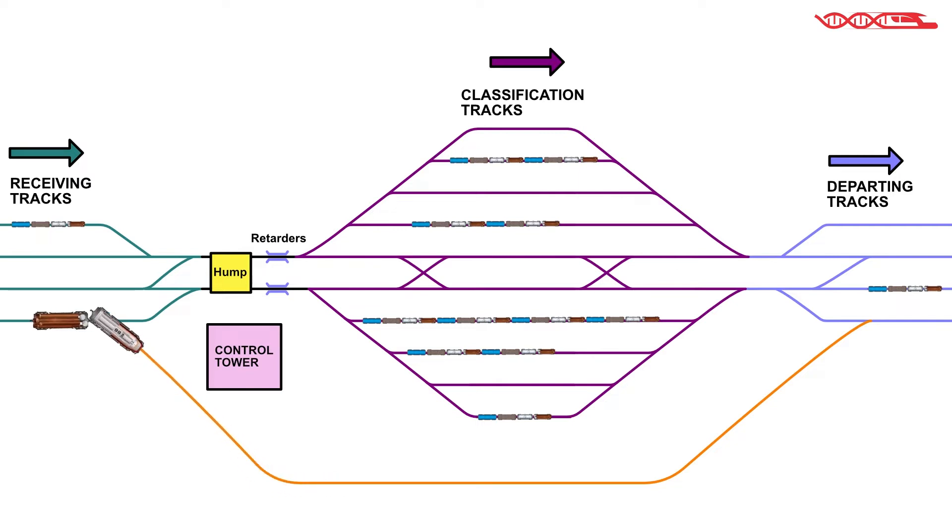At the marshaling yard there is also a control tower, usually positioned close to the hump, from which the station inspector or marshaling yard dispatcher can see and follow all car and shunting engine movements. Sometimes there are two control towers, one positioned close to receiving tracks and hump, and one close to departing tracks.